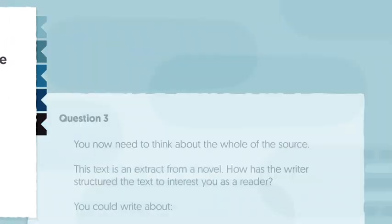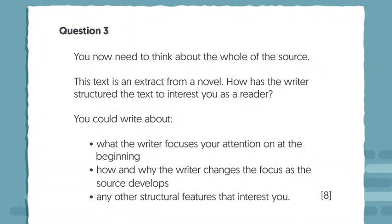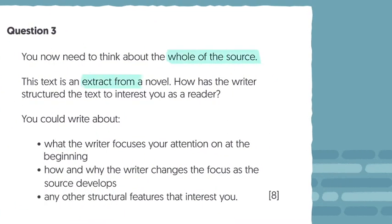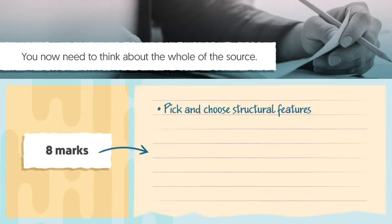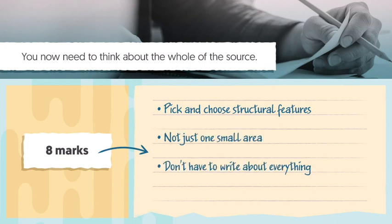Let's take a look at a sample Question 3. It asks you to look at the whole source, which in this case is an extract from a novel, and think about how the writer has structured the text to interest you as a reader. It can seem worrying when you're asked to look at the whole source, but remember this is only an 8 mark question. This means that you can pick and choose your structural features from anywhere in the source, not just one small area. It doesn't mean you have to write about everything you see — try to select around three key features that you feel confident you can write about.